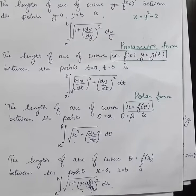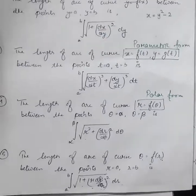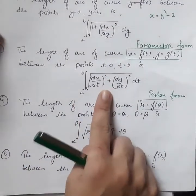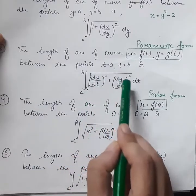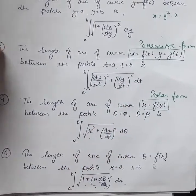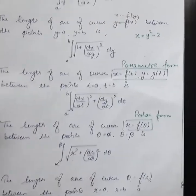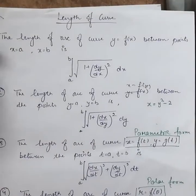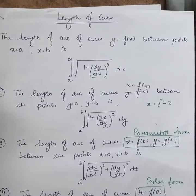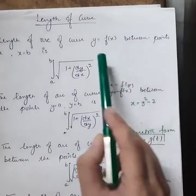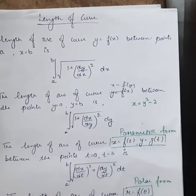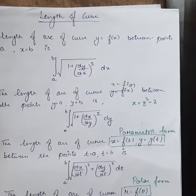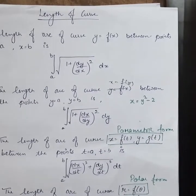So we have these formulas which can be used as per the equation given in our problem. If we have a parametric form, we will use the formula: integral a to b of the square root of (dx/dt)² plus (dy/dt)² dt. If the equation is in Cartesian form, we apply formula one or formula two depending on whether the equation is expressed in terms of x or in terms of y.